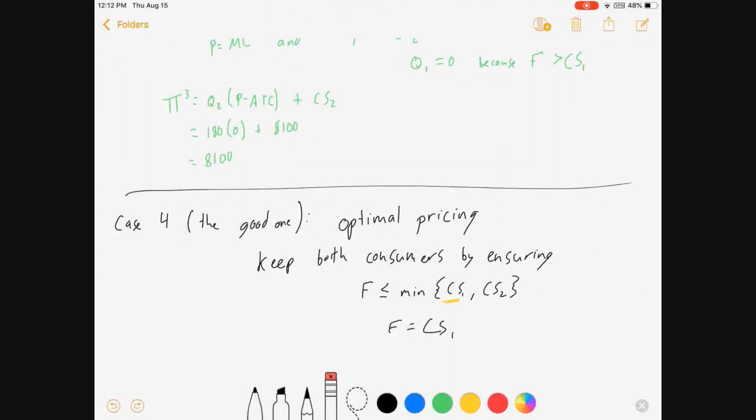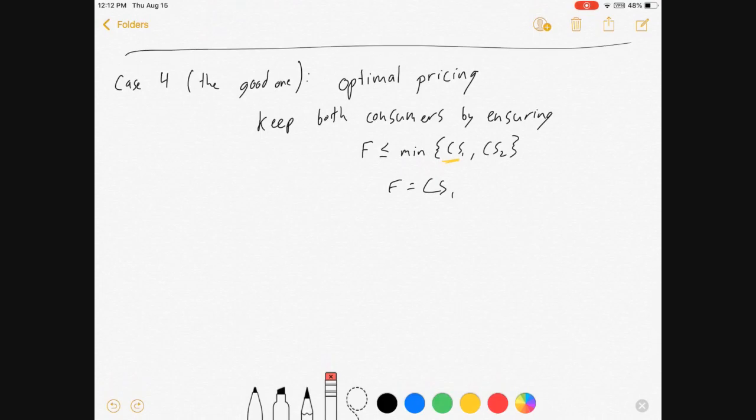We also know they're not going to charge a fee less than they have to, so we're just going to set the fee equal to the consumer surplus of consumer 1. This means profit for the firm in case 4, which we'll call our optimal profit (denoted by that lovely star), is equal to (Q1 + Q2) times (price - average total cost) plus 2CS1. That's (100 - P) plus (200 - 2P) times (P - 10) plus 2 times 1/2 times (100 - P) squared. I've substituted everything in that we know so far, and this whole equation is just a bunch of functions—it's just a big function of P now.